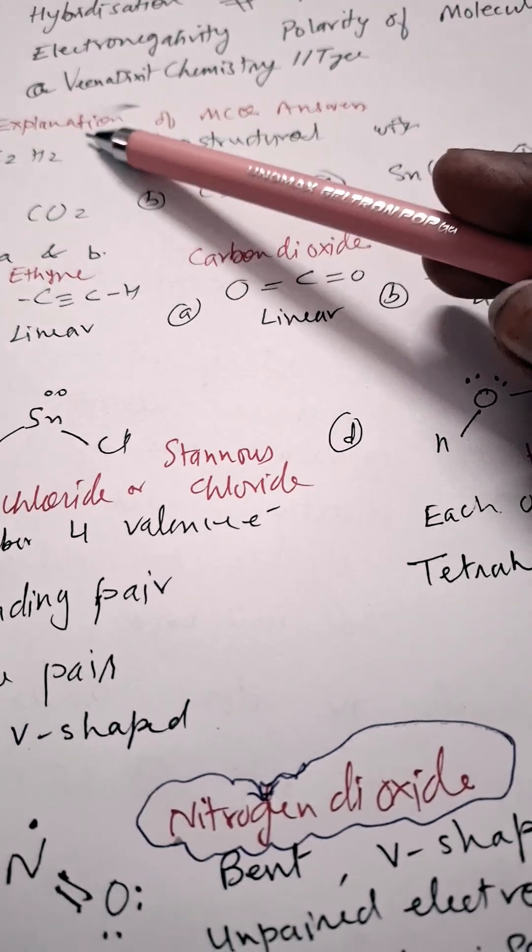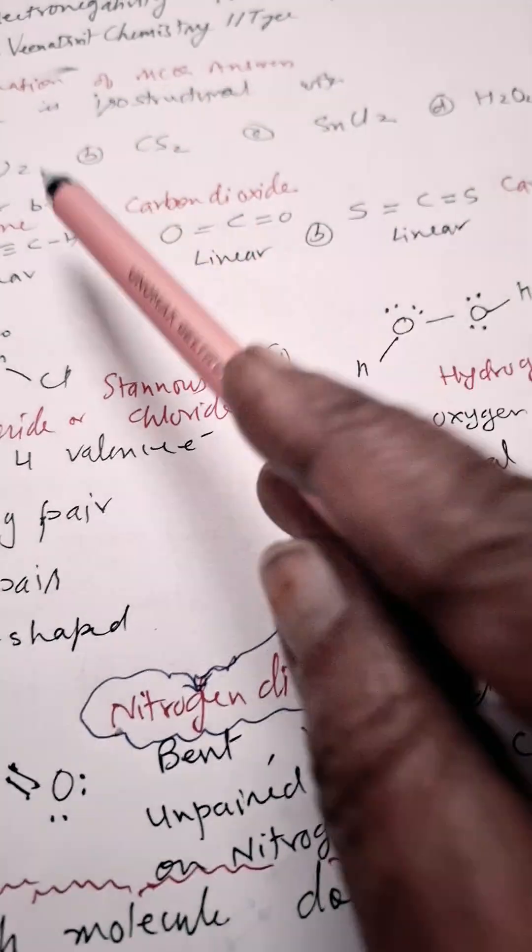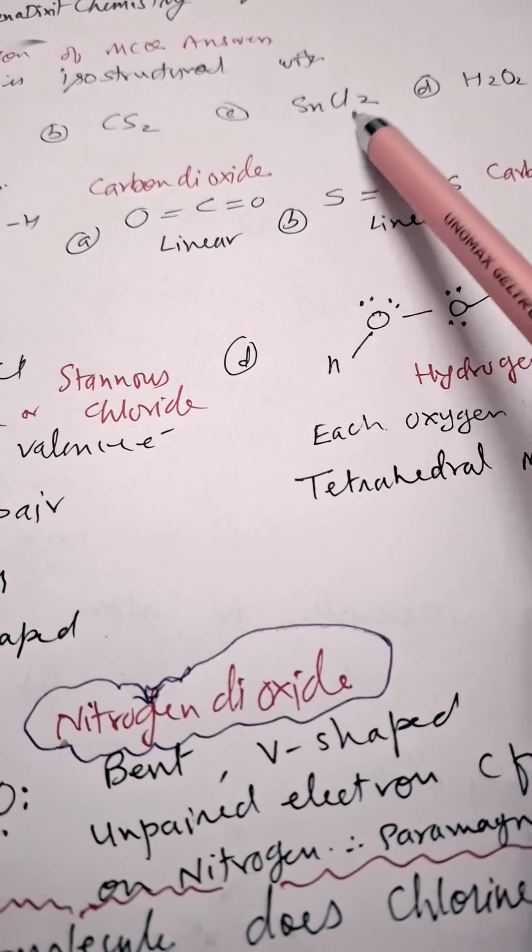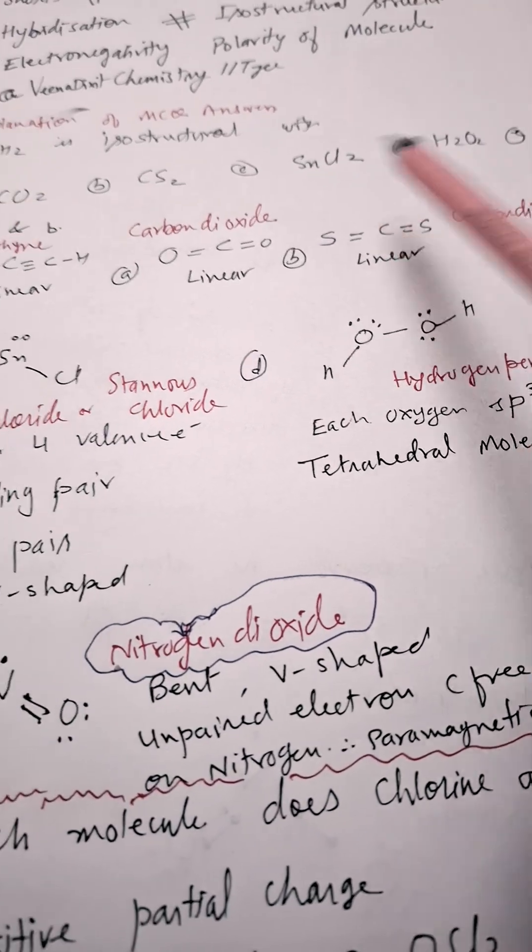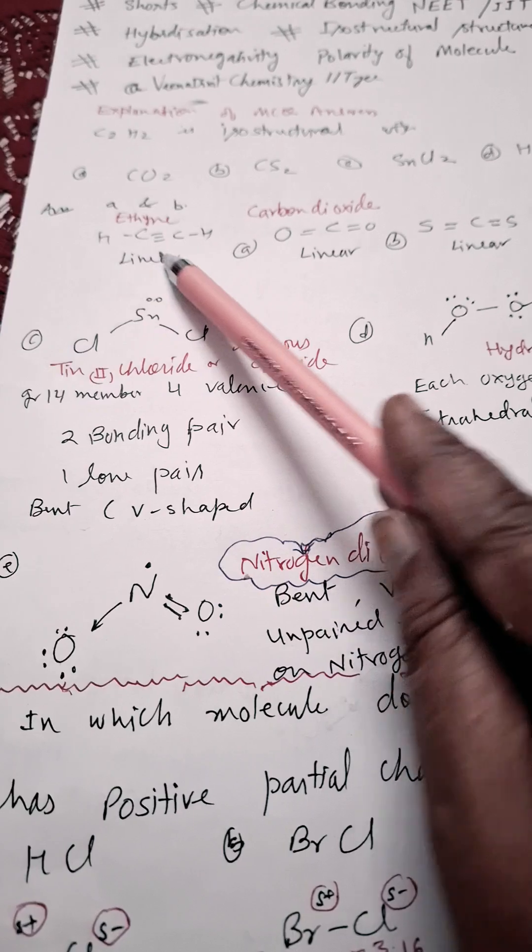Explanation for this: C2S2 is isostructural with carbon dioxide, carbon disulfide, tin-2 chloride or stannous chloride, hydrogen peroxide, or NO2 nitrogen dioxide. So I selected A and B.